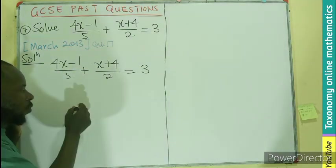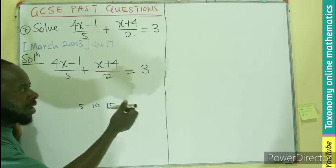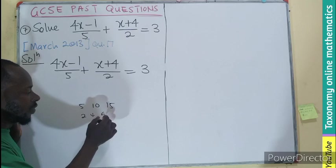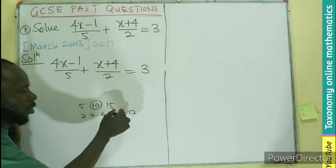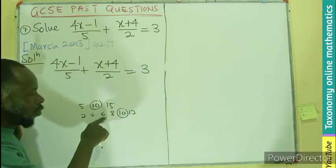Multiples of 5 will be 5, 10, 15. Multiples of 2 will be 2, 4, 6, 8, 10, 12. The common multiple between the two numbers will be 10.